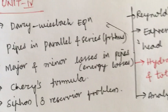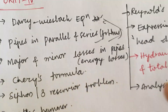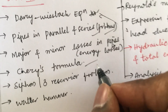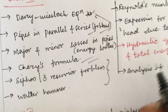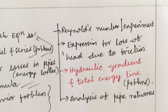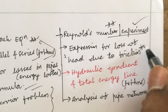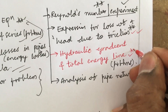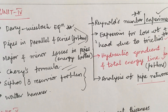Unit 4: Darcy-Weisbach equation — its expression is a gunshot question. Pipes in parallel and pipes in series with related problems are much-awaited questions. List out major and minor losses in pipes — this is a short question. Darcy's formula may be 2 to 3 marks. Define syphon, three-reservoir problem, and water hammer — these are very short questions worth 2 to 3 marks; do not neglect them. The Reynolds number, Reynolds experiment, and the expression for head loss due to friction are topmost questions. Hydraulic gradient line and total energy line with problems are very important. Analysis of pipe networks is also covered in Unit 4.